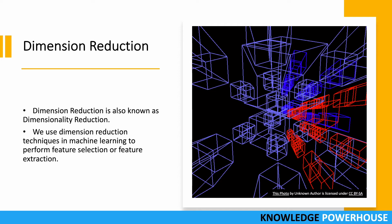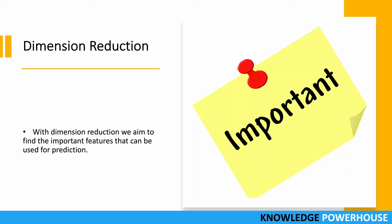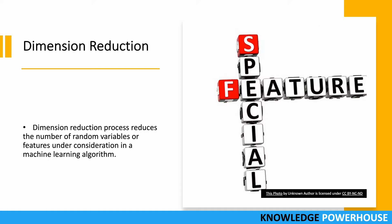We use dimension reduction techniques in machine learning to perform feature selection, feature extraction, or feature prioritization. These techniques help find the right set of features for our model. Features are like dimensions, and with dimension reduction we aim to find the important features that can be used for prediction. This process also reduces the number of random variables or features under consideration in a machine learning algorithm.